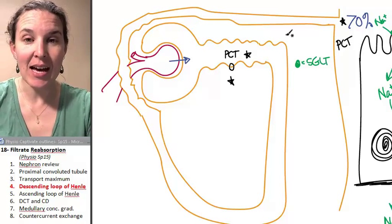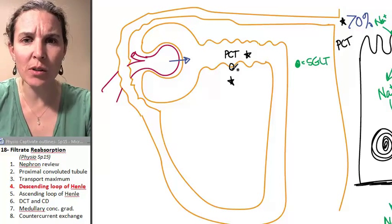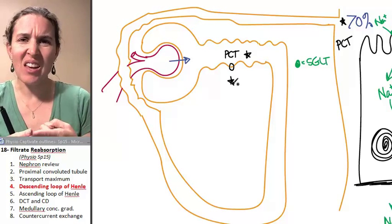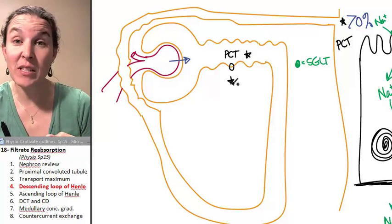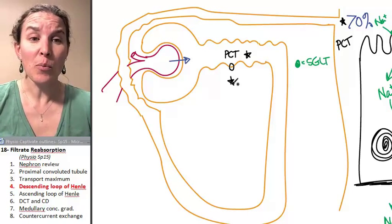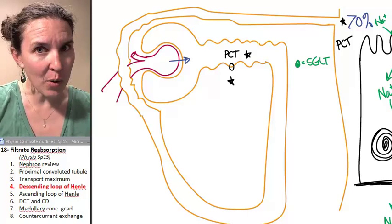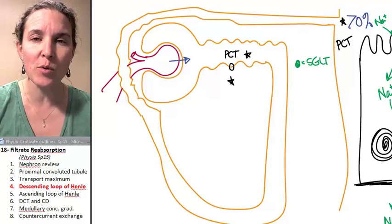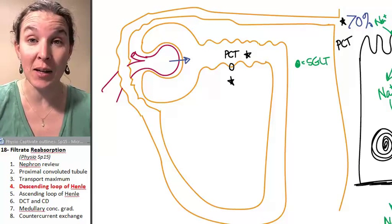Descending loop of Henle. First reviewing the proximal convoluted tubule - cells are thick with high surface area. There's lots of transporters in there, probably lots of mitochondria to power the transport. Lots of reabsorption of everything happening.